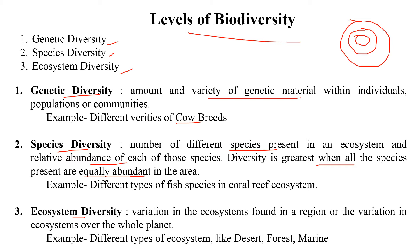Ecosystem diversity is a much larger term. To summarize the three levels: genetic diversity is focused on a particular species; species diversity is about how many species are present; and ecosystem diversity refers to how many different types of ecosystems exist in a particular region. Variation in ecosystems across the planet includes desert ecosystems, forest ecosystems, and marine ecosystems — all of these together constitute ecosystem diversity.